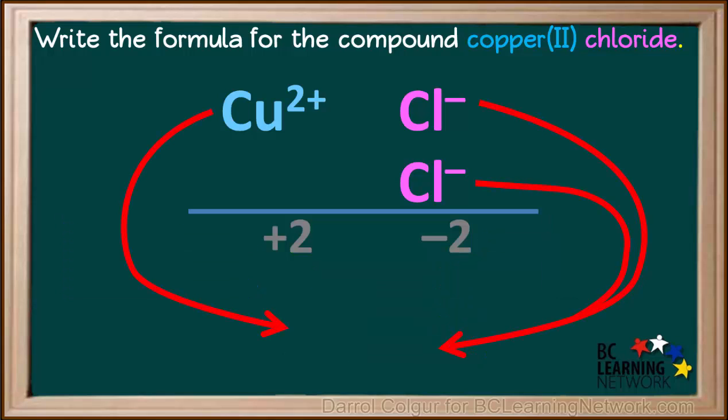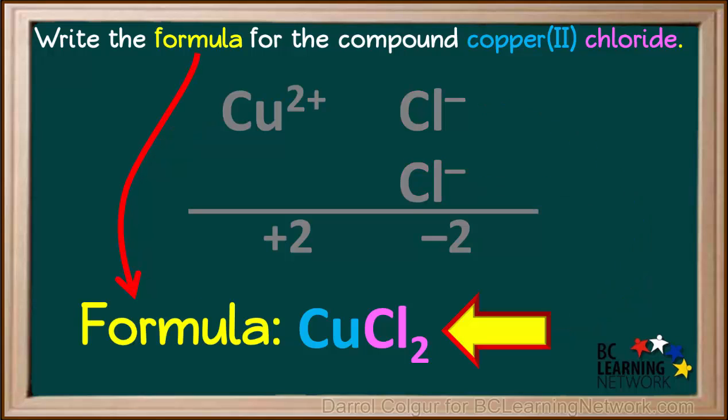There is one copper ion for every two chloride ions. So the formula is CuCl2. We have now answered the question. The formula for copper 2 chloride is CuCl2.